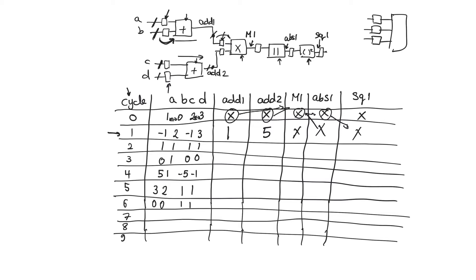On cycle two, inputs minus one, two and minus one, three will go to adders add one and add two, calculating sums one and two. Simultaneously, the outputs one and five from the adders will now go to M1, because a second clock cycle allows them to cross the second column of registers, and the multiplier will multiply these two numbers.